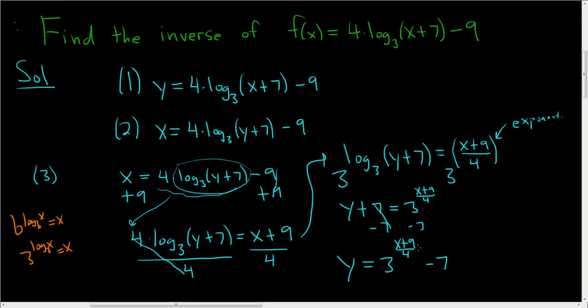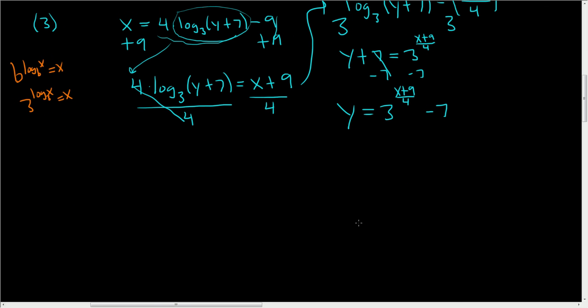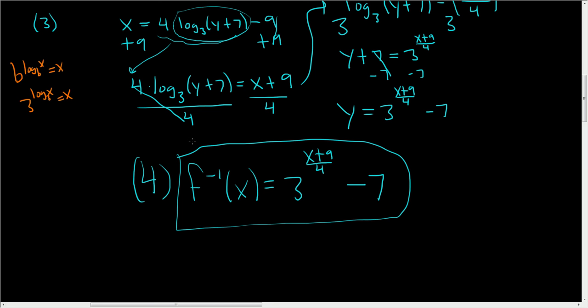And the last step is a step that I like to do, and that's just writing down the answer with the correct notation. So f inverse of x is equal to 3 to the x plus 9 over 4 minus 7. And that is the final answer. I hope this helps.